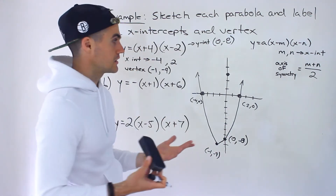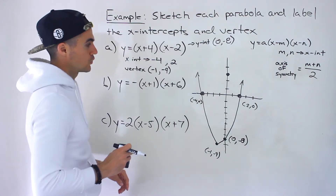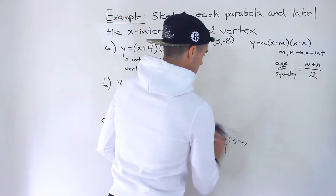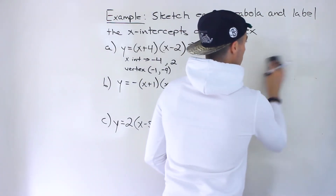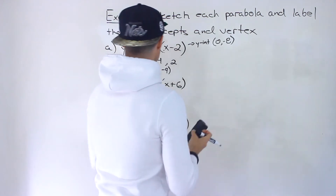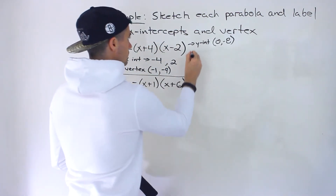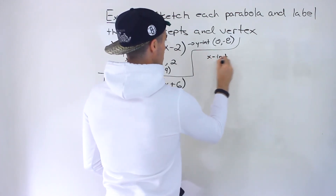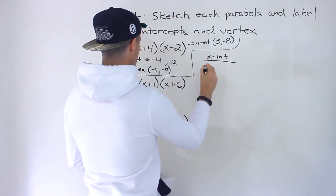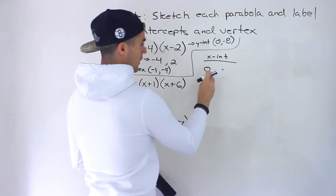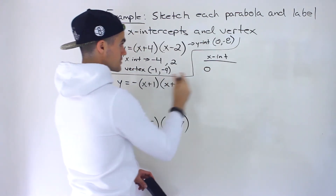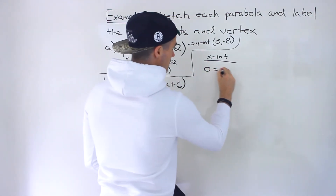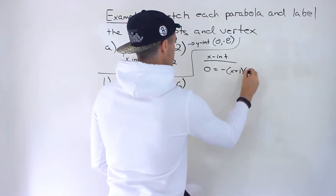That's my process for graphing these. Moving on to part b — I'll erase the graph to give myself some room. For part b, same sort of thing: let's find the x-intercepts first. How do we find them algebraically? Well, the y-value for an x-intercept is 0. So we set 0 equal to negative 1 times x plus 1 times x plus 6.